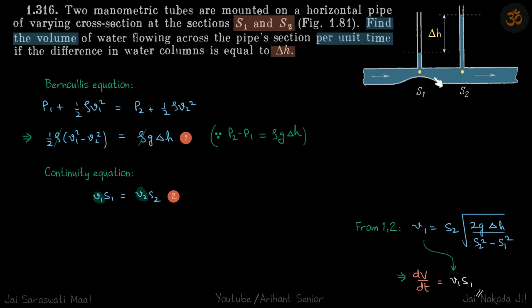We have this manometric tube which is used to find the volume flow rate inside a pipe. We have a stream of water in which we put this manometric tube and we see that there is a difference of height. Using this information we need to find what is the volume flow rate per unit time inside this tube.